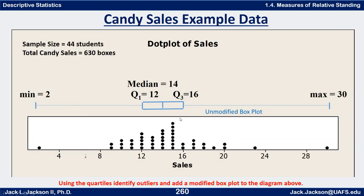Alright, hopefully you have a graph similar to this in front of you — a number line going from at least 2 to 30, with dots organized and the box plot drawn. The box plot has a whisker from the minimum up to Q1, a vertical bar at the median of 14, another vertical bar at Q3 of 16, and a whisker from Q3 out to the maximum of 30. The box goes from Q1 of 12 to Q3 of 16.